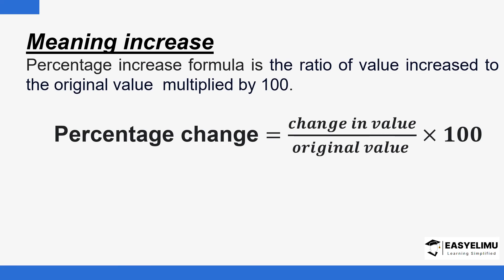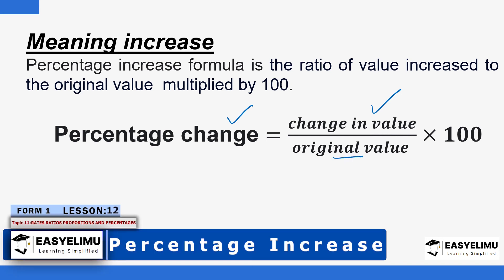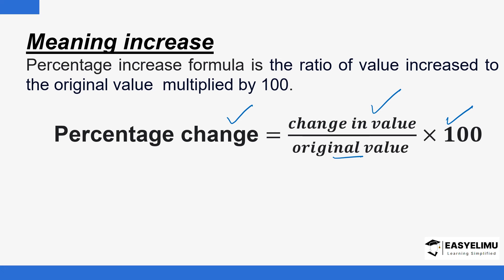The percentage increase formula is the ratio of the value increased to the original value, multiplied by 100. In simple terms, you take the change in the value over the original value and multiply by 100. That is how you get percentage increase. Take note that it has to be the change in value over the original value, then you multiply that fraction by 100.